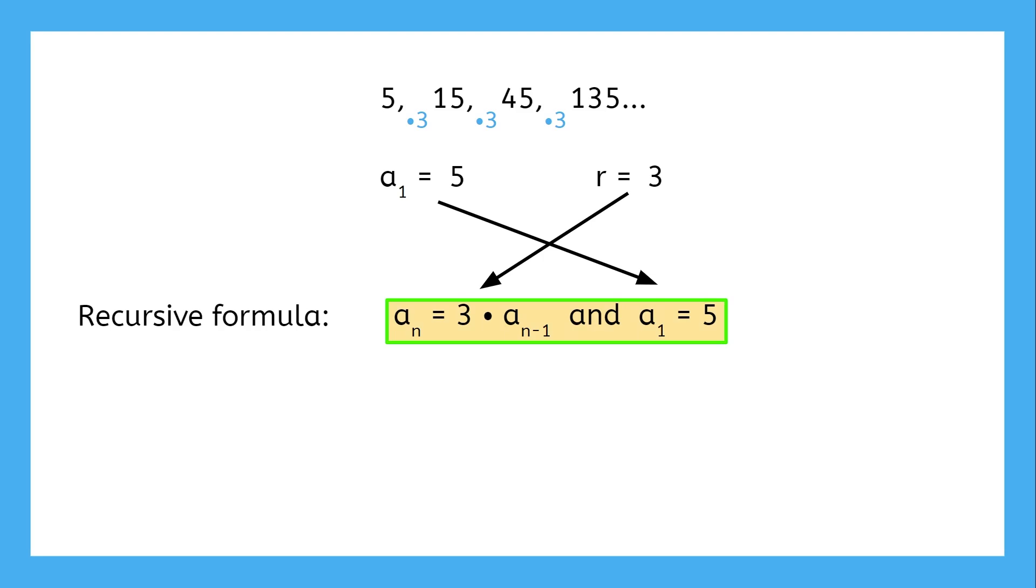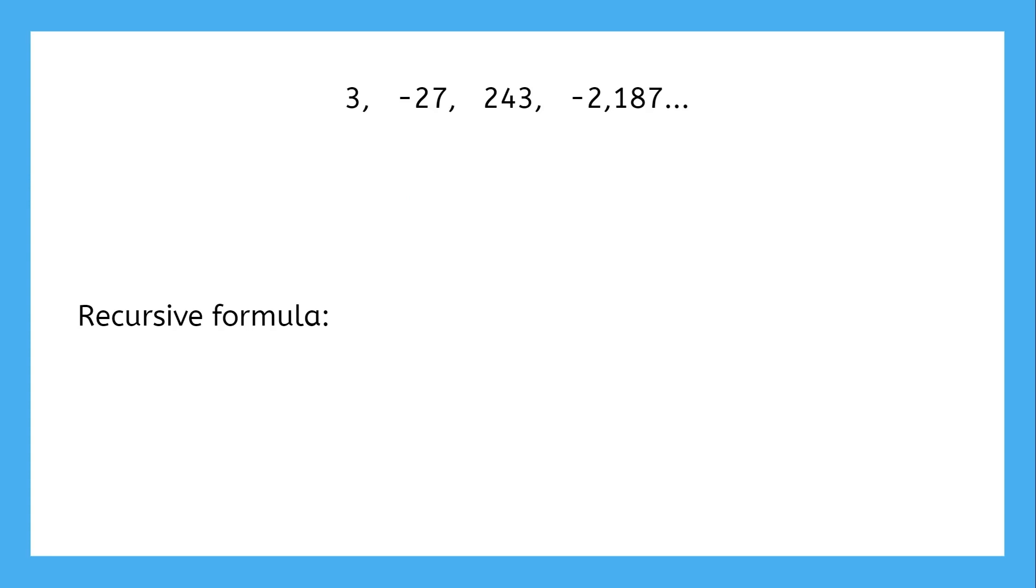Let's try this one now. Do you remember what causes a geometric sequence to alternate signs between positive and negative? We can see that the initial term is 3.